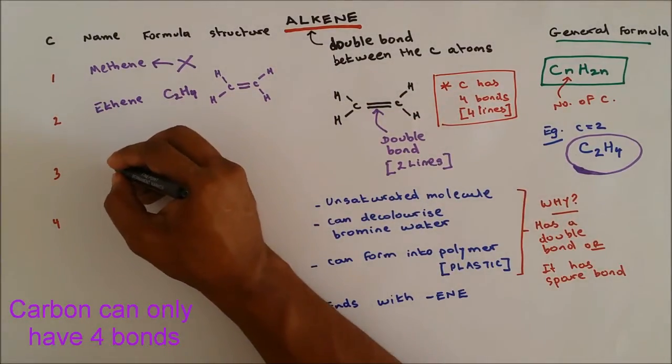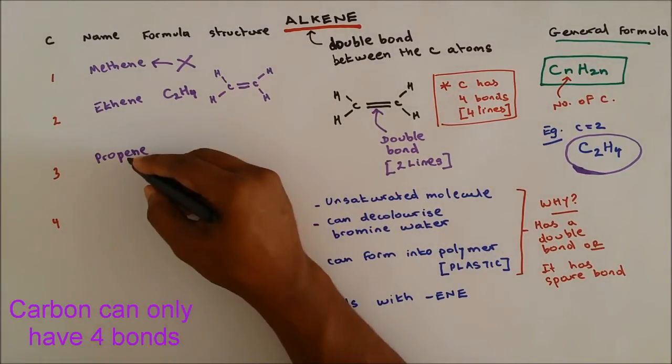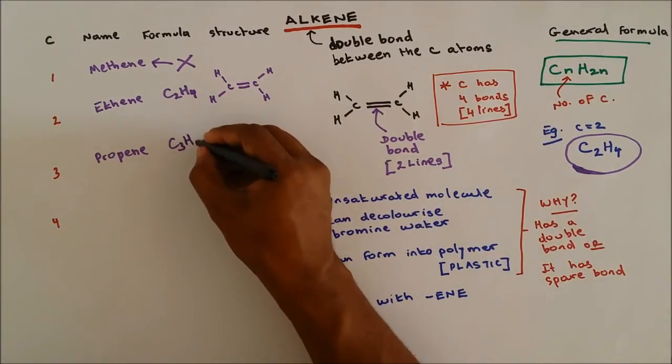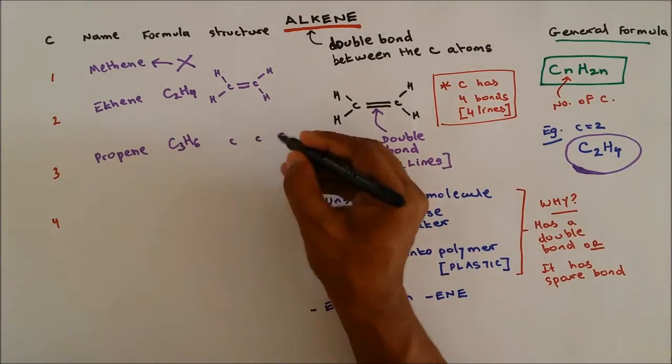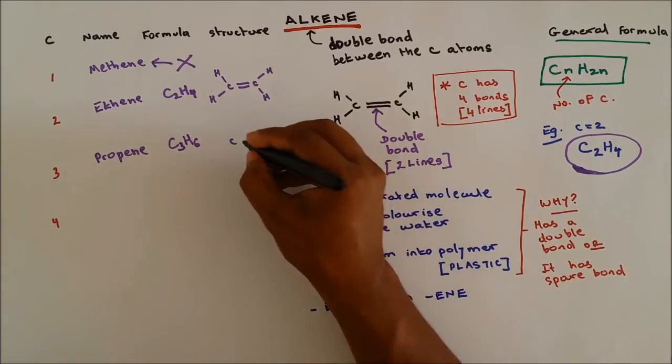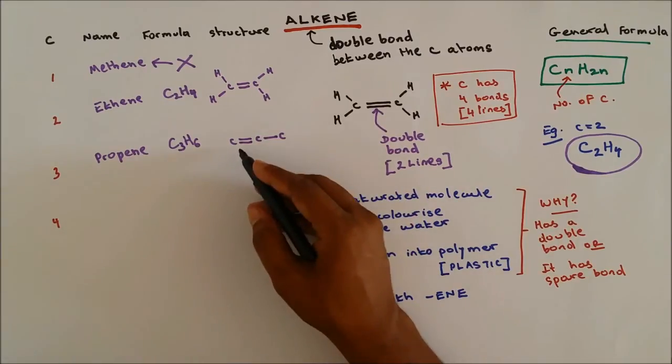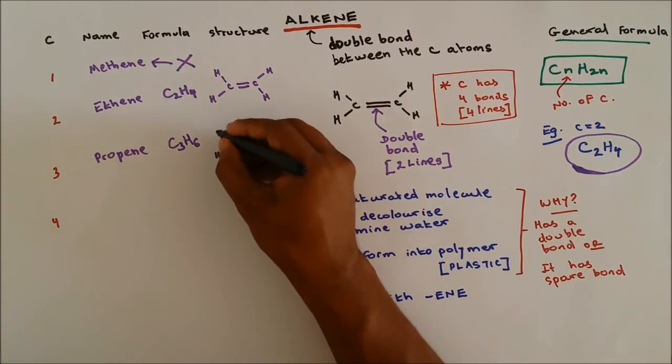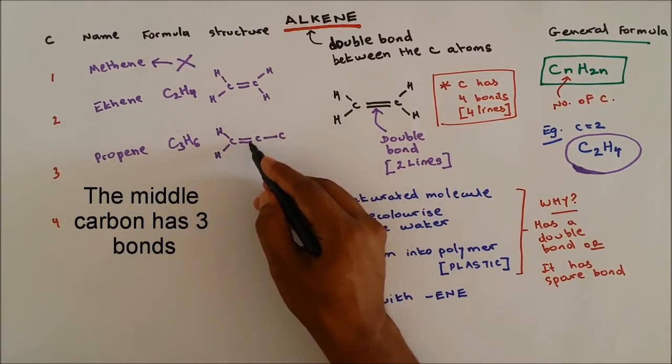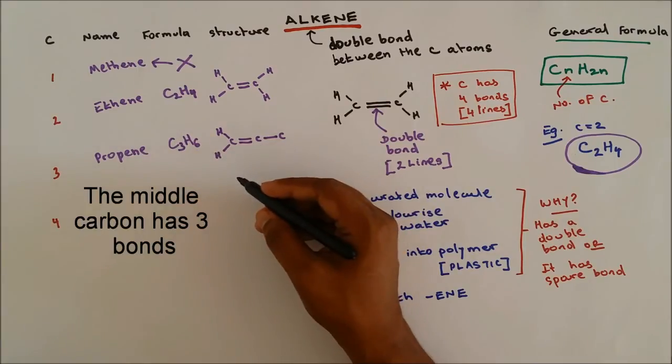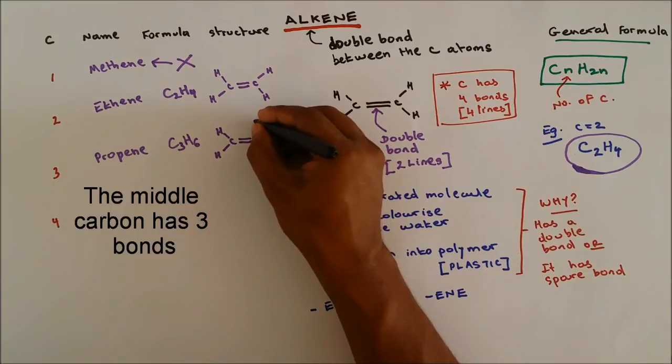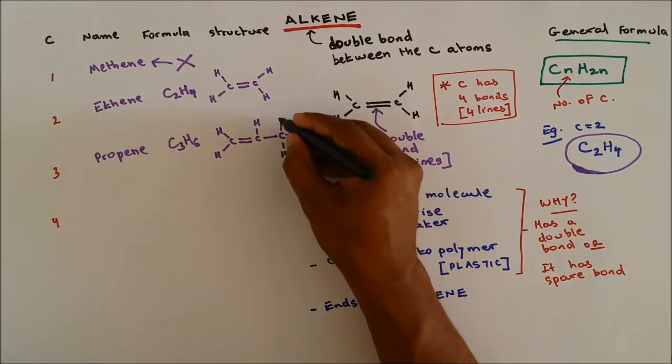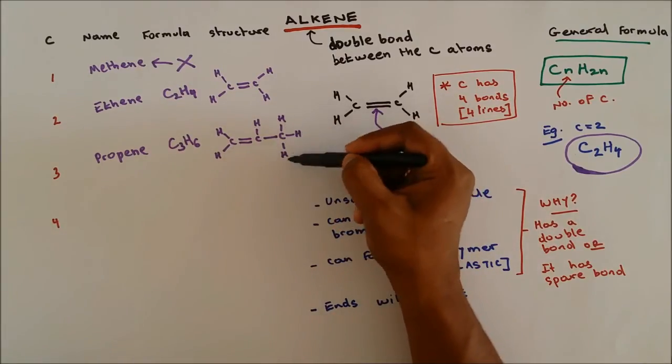If it's 3, it's called propene. If it's propene then this is 3. 2 times 3 is 6, so H is 6. How do we draw propene? We know that it has three carbons. Between the carbons, one of them has to have a double bond. We learned that carbon can only have four bonds which means four lines. This carbon has already two lines so you can have two more. Three bonds so you can only have one more because carbon has four bonds in total. This one has only one so you can have three more. And if you count the number of hydrogen: one, two, three, four, five, six - adds up to six.